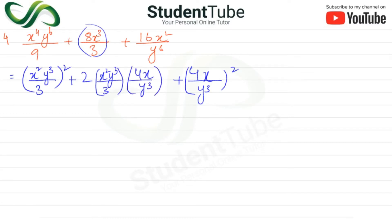So here we can make it 8. We have 4 plus 4 plus 4 plus 2 equals 8. And below we have 3 — Y cubed will cancel from Y cubed. So this gives the same value. Then we have 4X with X, this is X. And then we have the same value. If we put this into the formula, the expression becomes X squared Y cubed upon 3 plus 4X upon Y cubed.